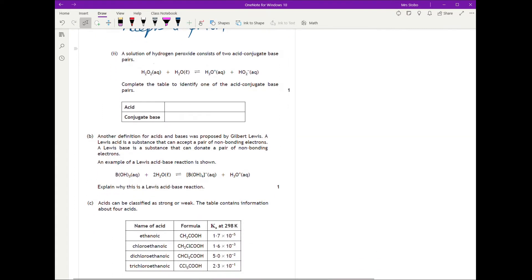A solution of hydrogen peroxide contains two acid conjugate base pairs. So let's try and figure out which one goes with which. Here is our hydrogen peroxide. So if you look at the peroxide and find something on the other side where it has either gained or lost a proton, here we go, here it has lost.